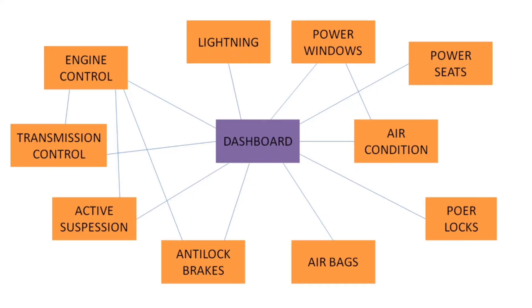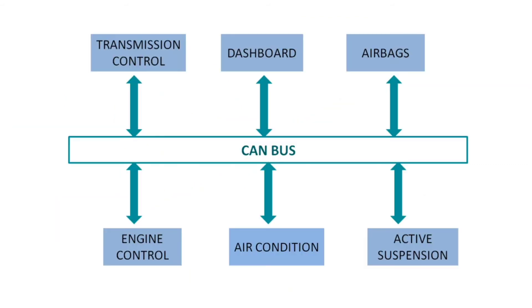Before the CAN protocol was introduced, ECUs communicated over a network that was very complicated. When we connected the wires, the number of wires used would also increase.